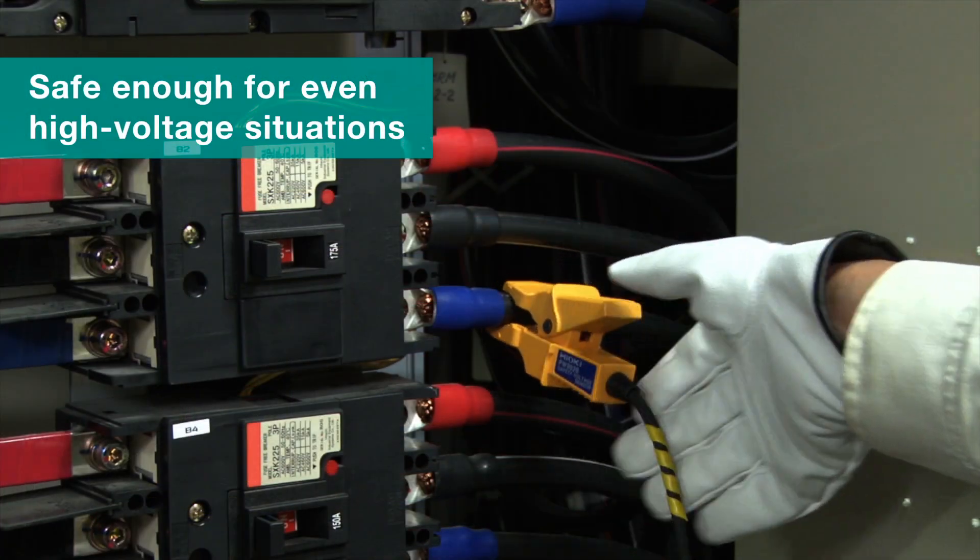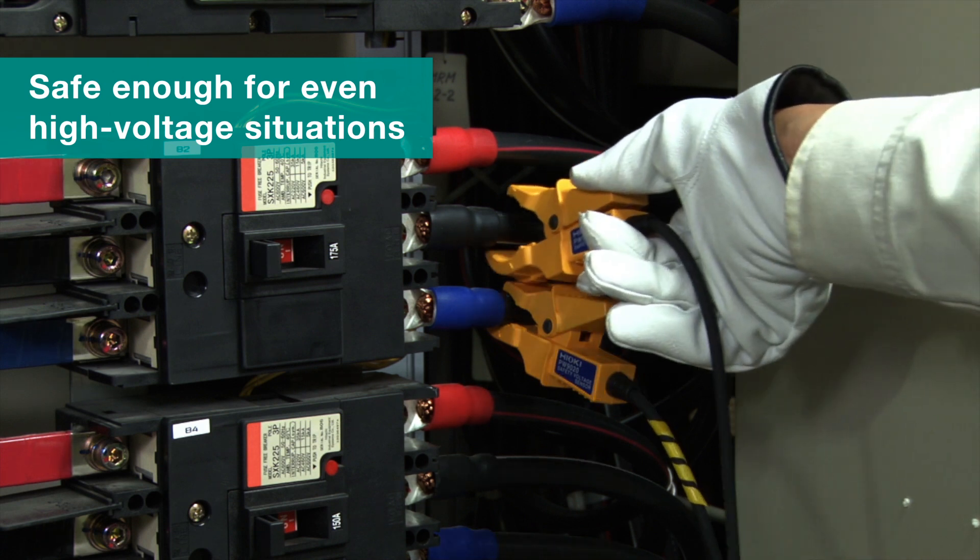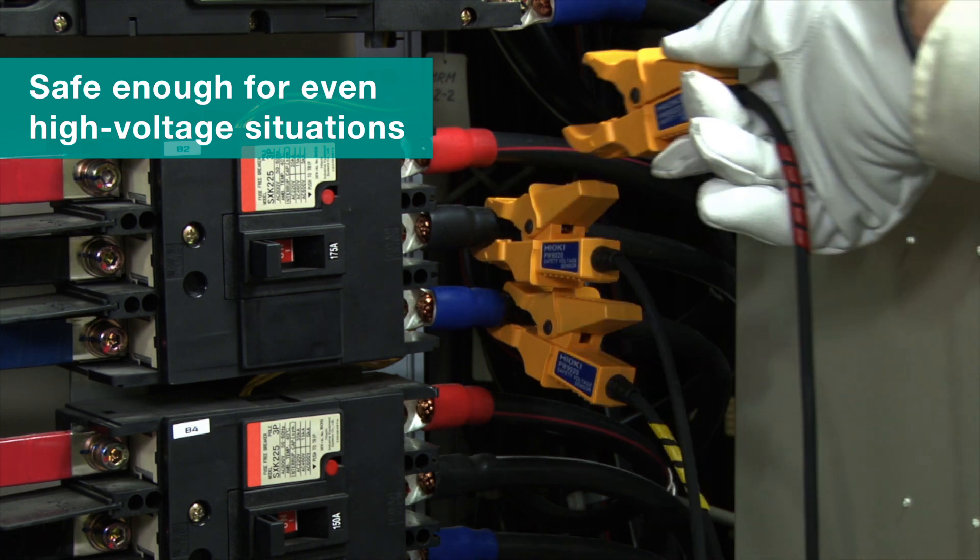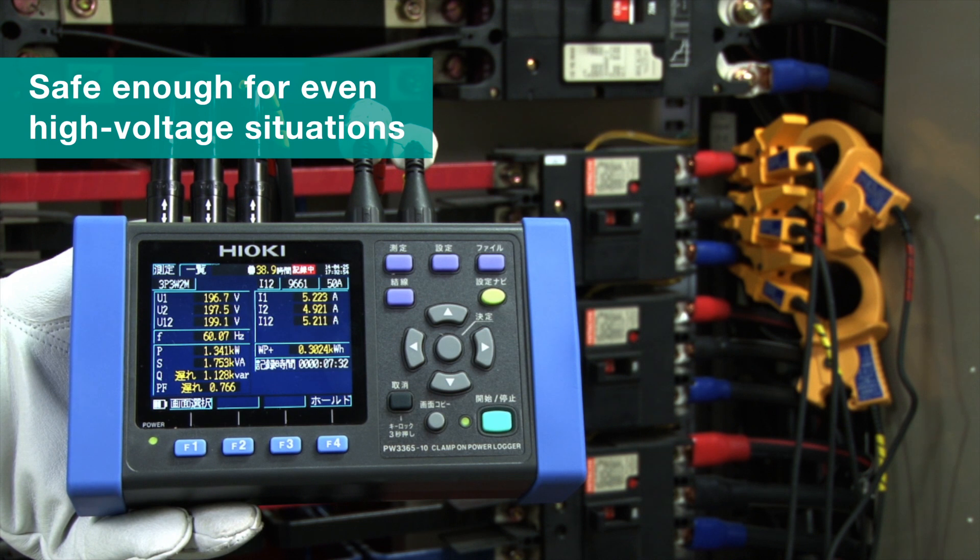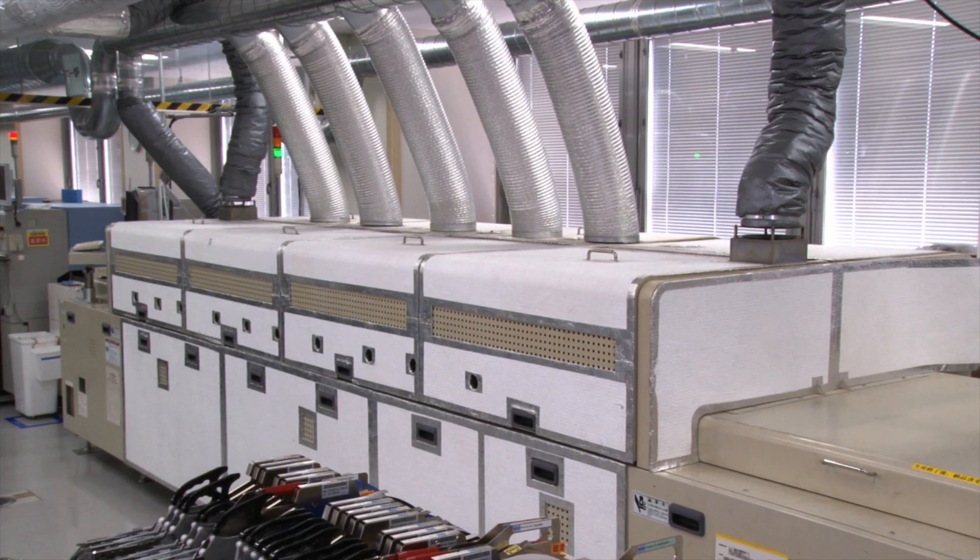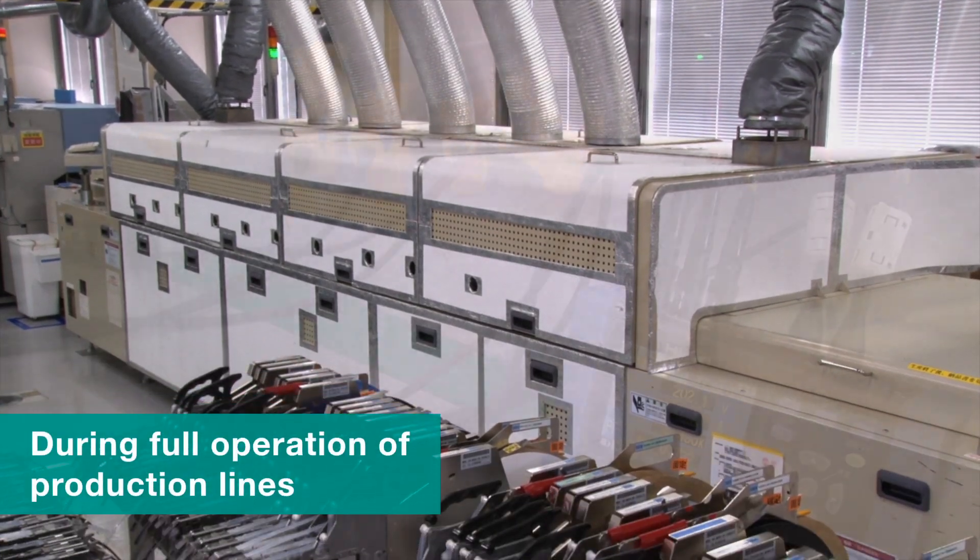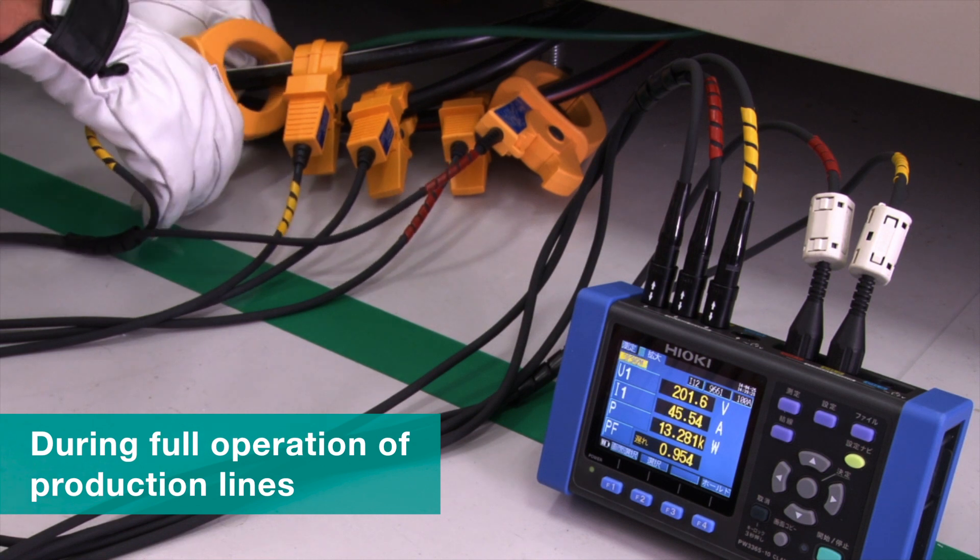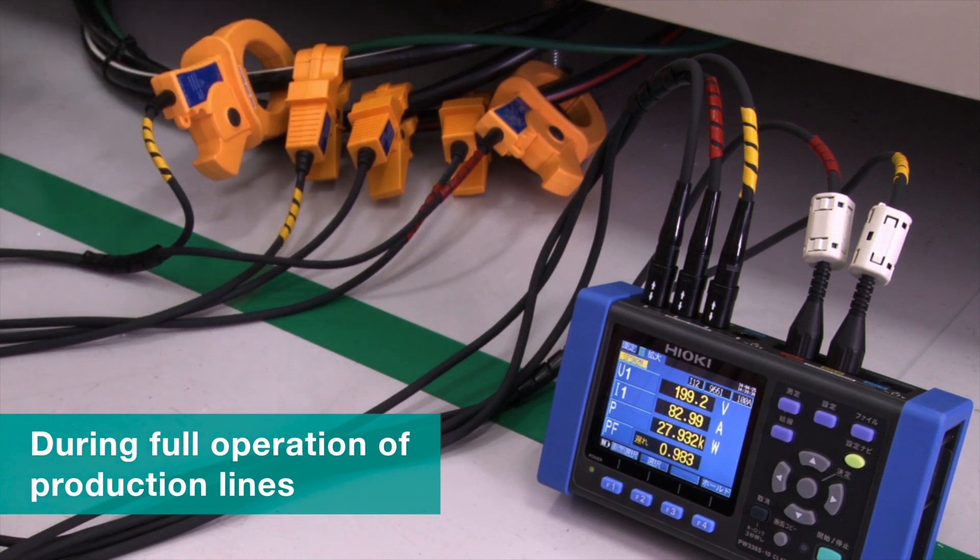The safety voltage sensors are so safe that they can even be used in high voltage situations. The power logger can be used while production lines are in full operation so that you don't have to interrupt your business processes.